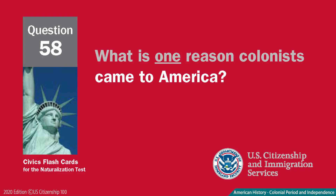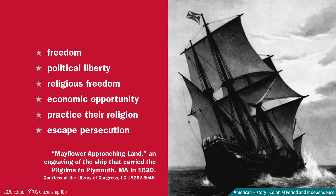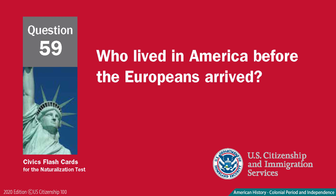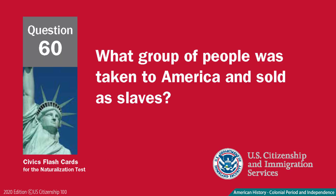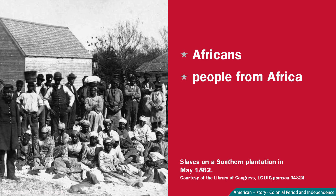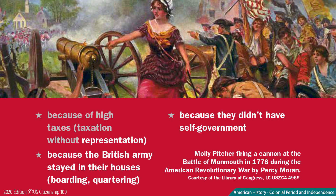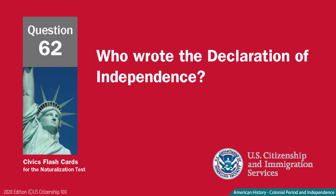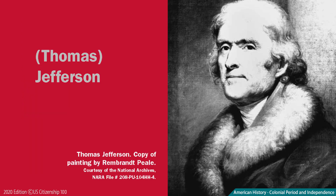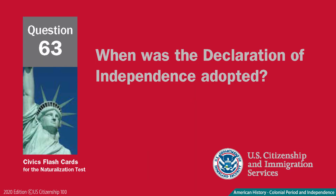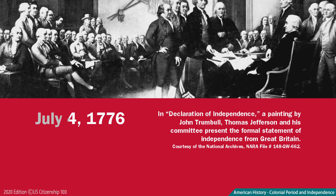What is one reason colonists came to America? Freedom. Who lived in America before the Europeans arrived? American Indians. What group of people was taken to America and sold as slaves? Africans. Why did the colonists fight the British? Because of high taxes. Taxation without representation. Who wrote the Declaration of Independence? Thomas Jefferson. When was the Declaration of Independence adopted? July 4th, 1776.